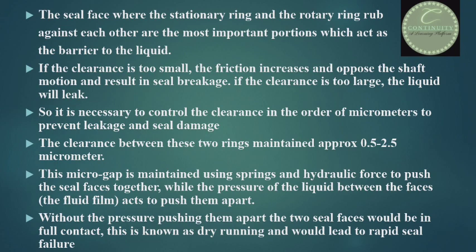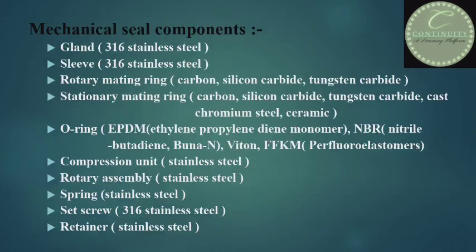There are various components of the mechanical seal, such as: gland, sleeve, rotary mating ring, stationary mating ring, compression unit, rotary assembly, spring, set screw, and retainer. The rotary ring and stationary ring are generally made of carbon, silicon carbide, and tungsten carbide.